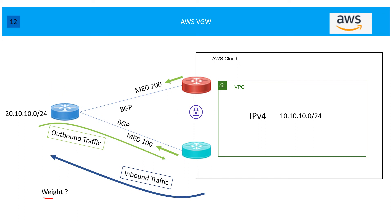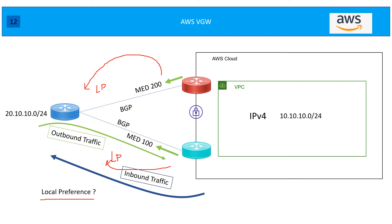You can also use BGP weight or local preference to solve the asymmetric routing problem. For local preference, set different LP values for routes received from each peer. Keep in mind: if your device supports asymmetric routing, life is easy; if it doesn't support asymmetric routing, you need to do these tweaks using AS path prepending, MED, weight, or local preference.